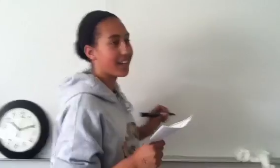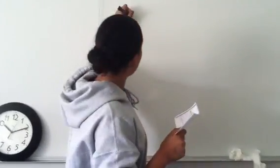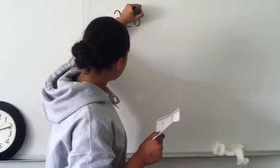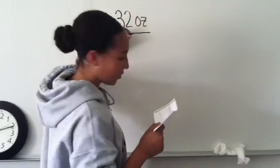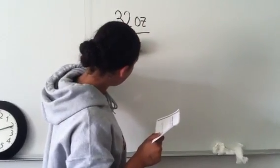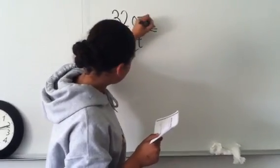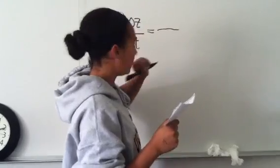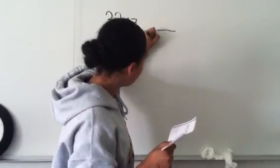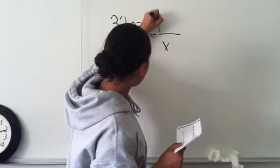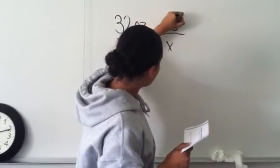So you can do this by writing an equation. You can do 32 ounces over one quart equals, and you don't know how many quarts it is, so you're going to do X for that. You can do 128 ounces over X.